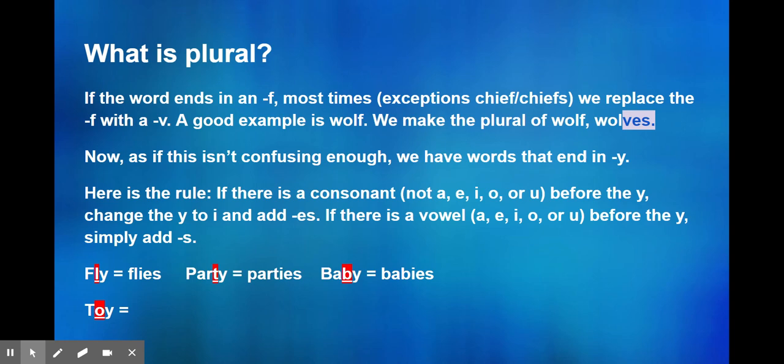Now, toy has an O before the Y, which is a vowel, so we just add an S. Ray has an A, so we add an S. And buoy has an O. I know there are two vowels right before the Y. The first one doesn't matter. It's only the one right before the Y, and that makes it buoys.